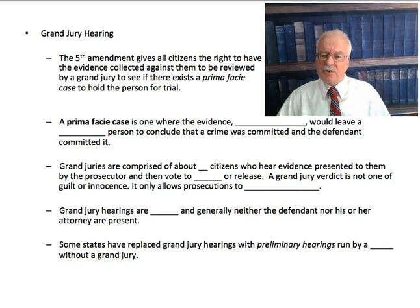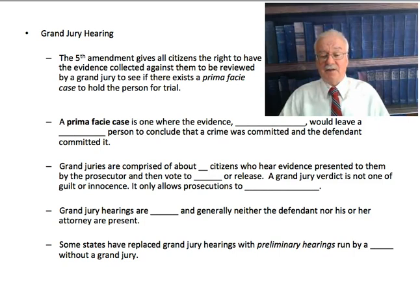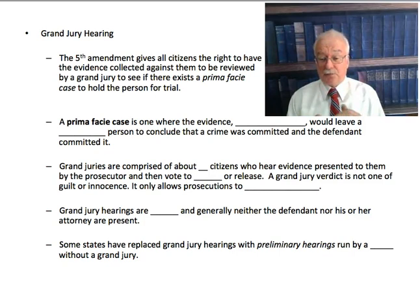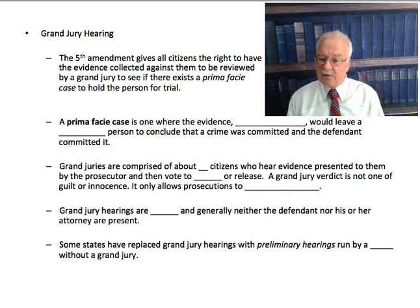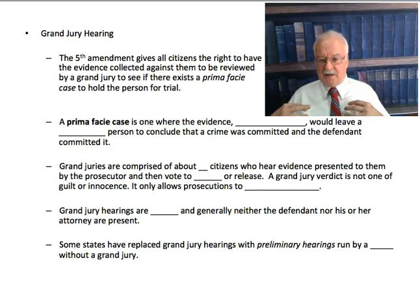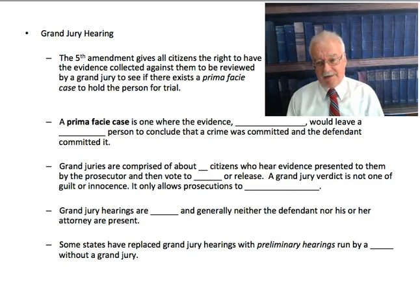In some jurisdictions, you have a grand jury hearing. The Fifth Amendment to the U.S. Constitution gives all citizens the right to have the evidence collected against them reviewed by a grand jury, to see if there exists a prima facie case to hold the person for trial. A prima facie case is one where the evidence, at first glance — that's what prima facie means, it's Latin for 'at first look' — would lead a reasonable person to conclude that a crime was committed and that the defendant committed the crime. The evidence is given by the prosecutor to the grand jury, and the defense attorney, who is not present at the grand jury hearing, doesn't have the opportunity to rebut it or make you look at it a second time more closely. So that's a prima facie case.